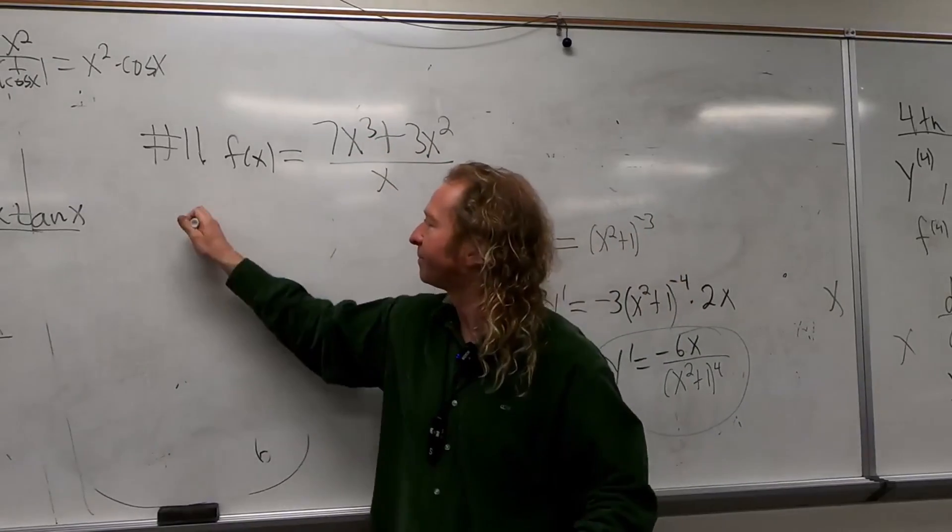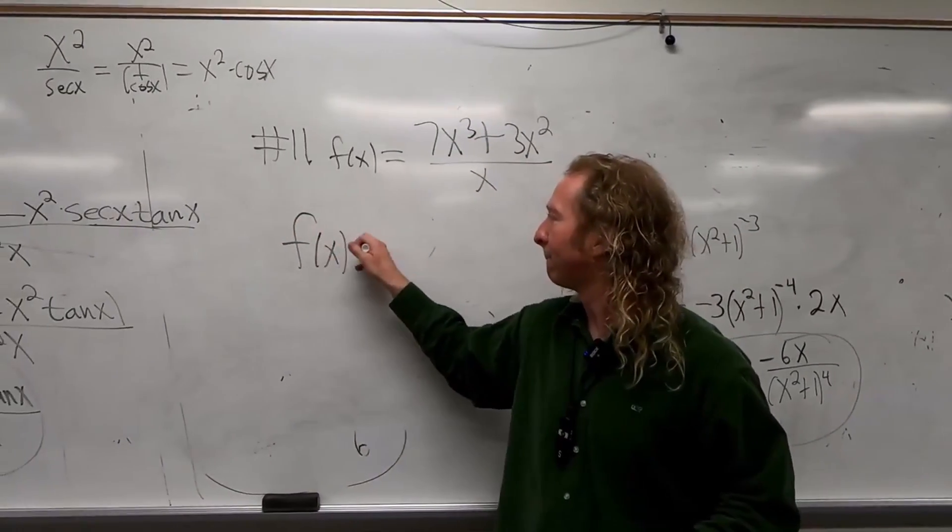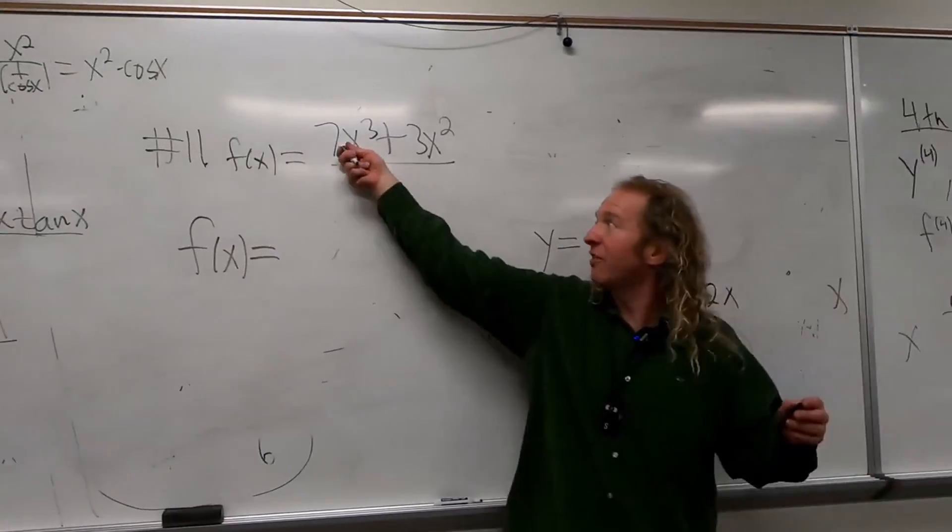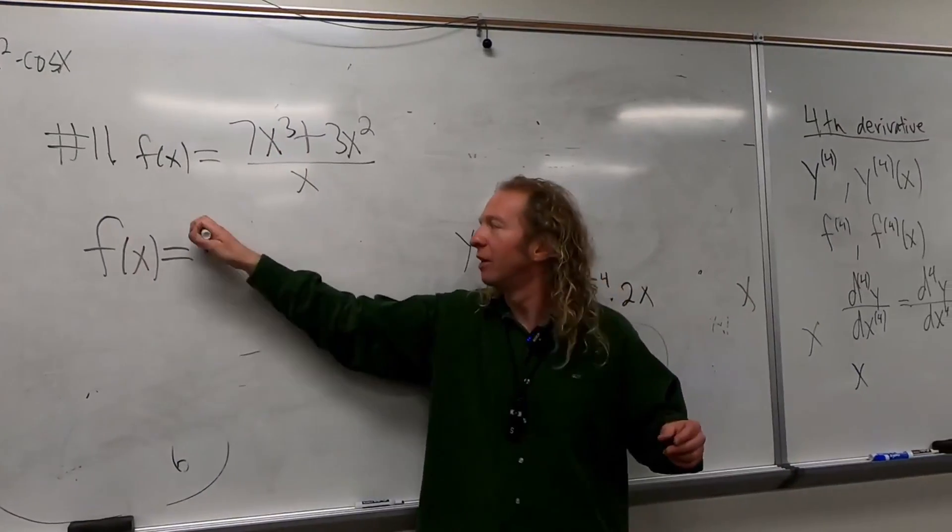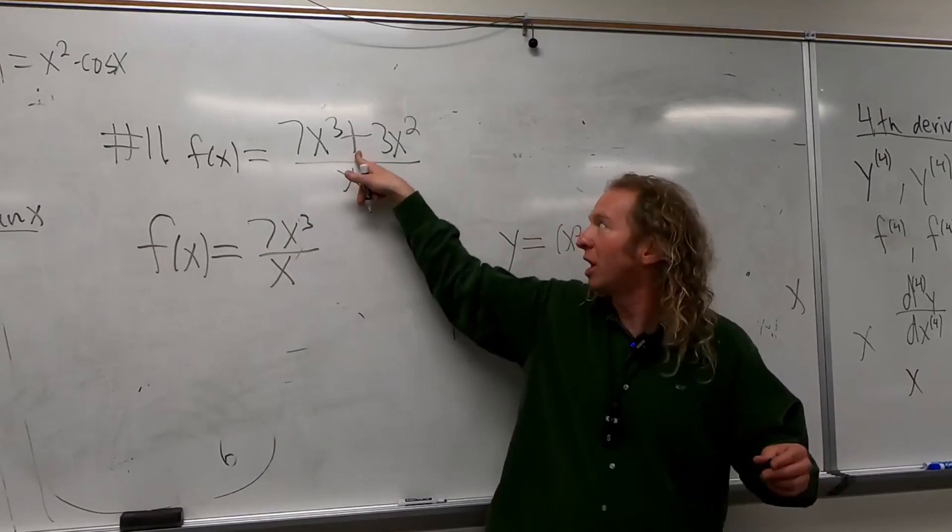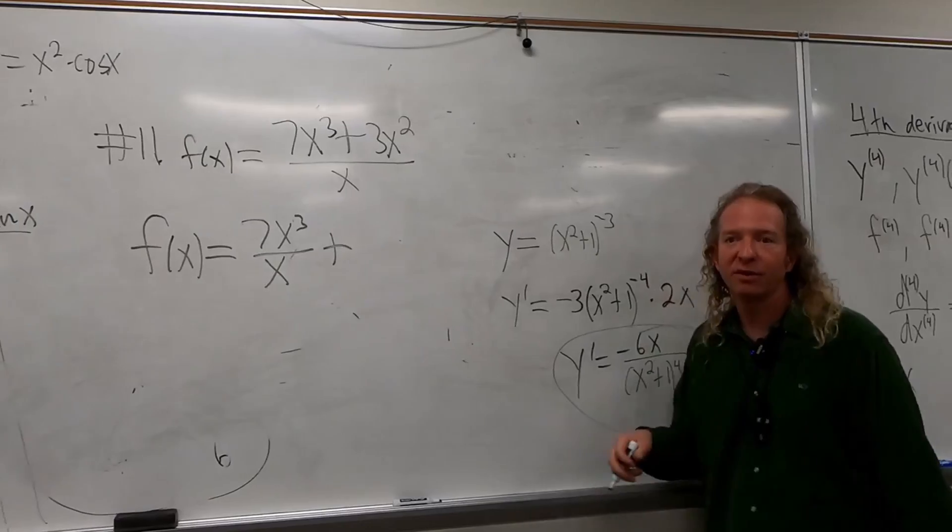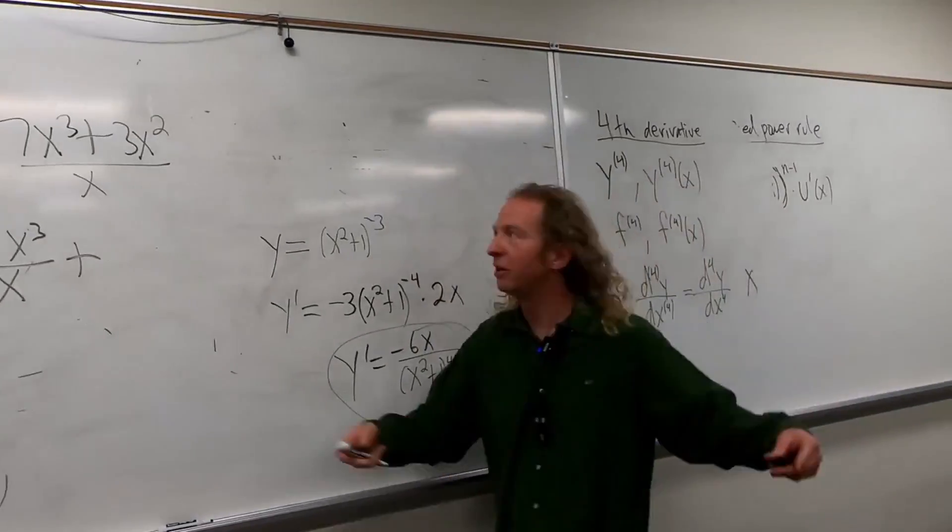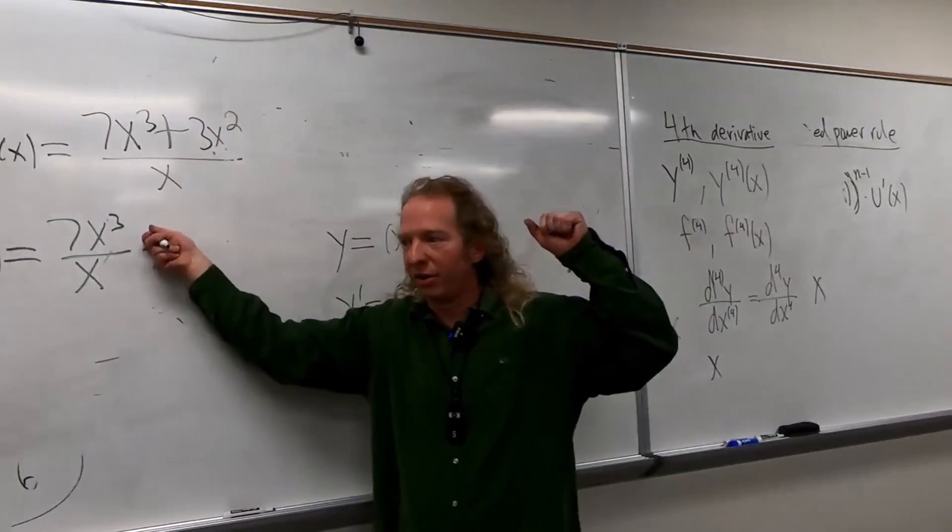So watch this. You can write this as 7x cubed over x, then plus, and then again here, 3x squared over x.